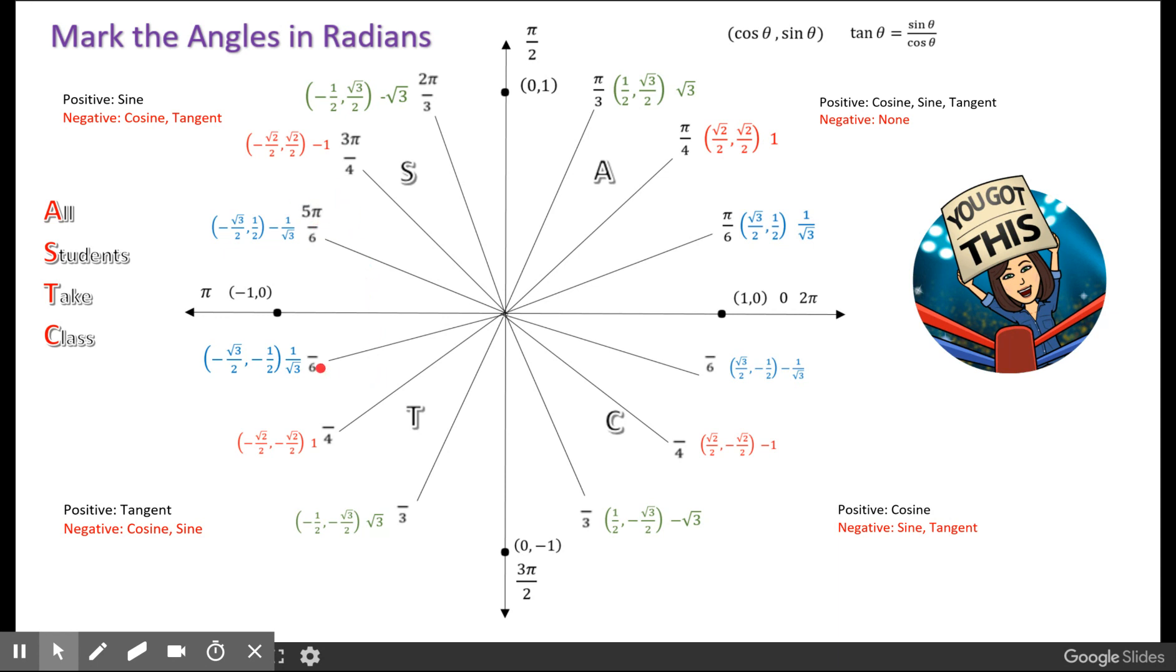In the third quadrant, the numerator is going to be exactly one higher than the denominator. So we have 7 pi over 6, 5 pi over 4, and 4 pi over 3.